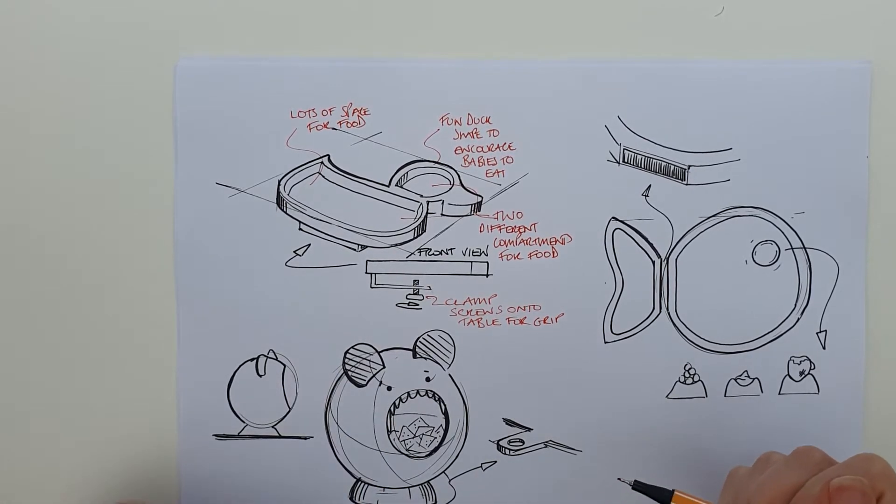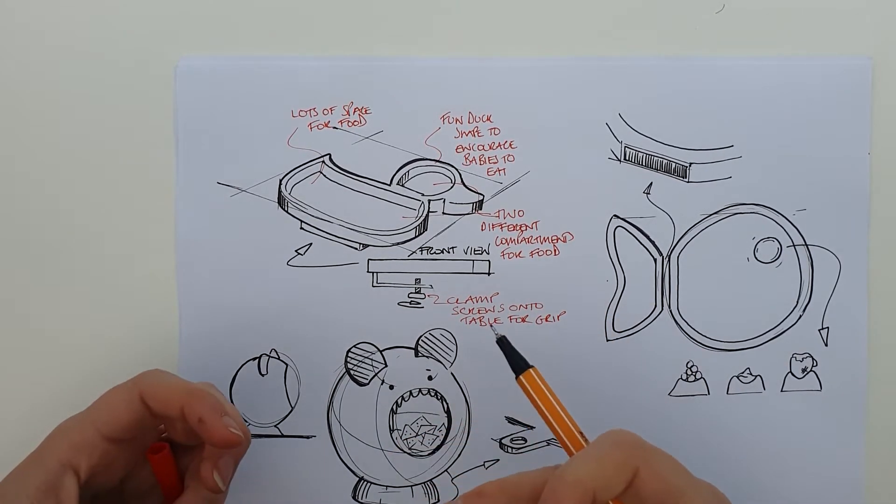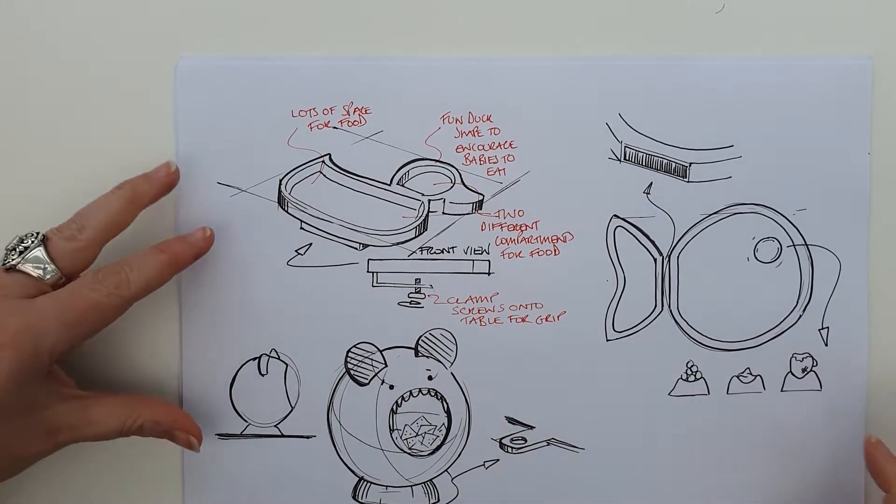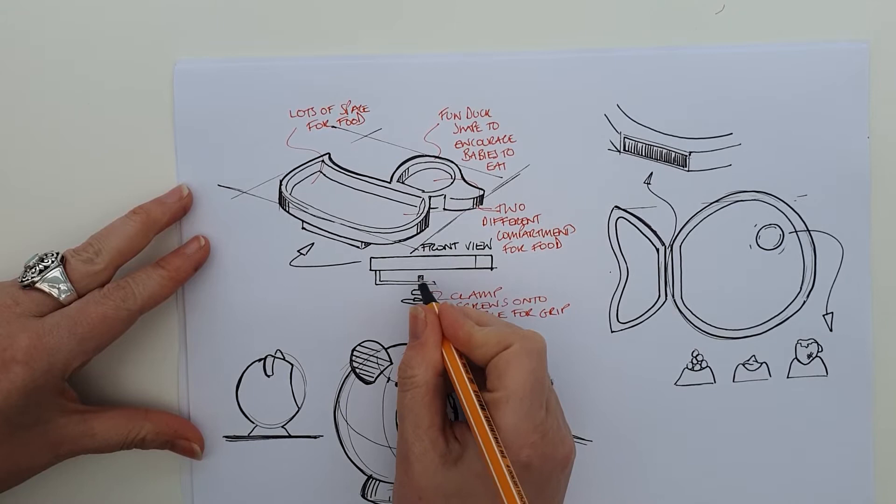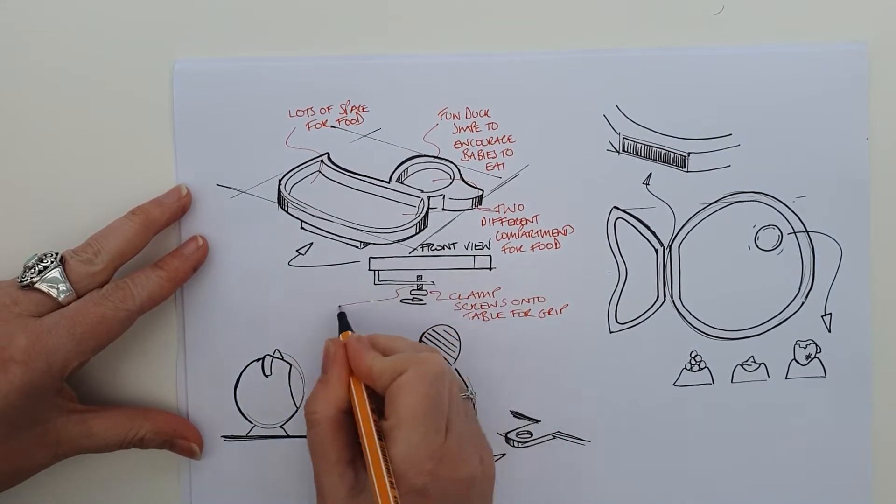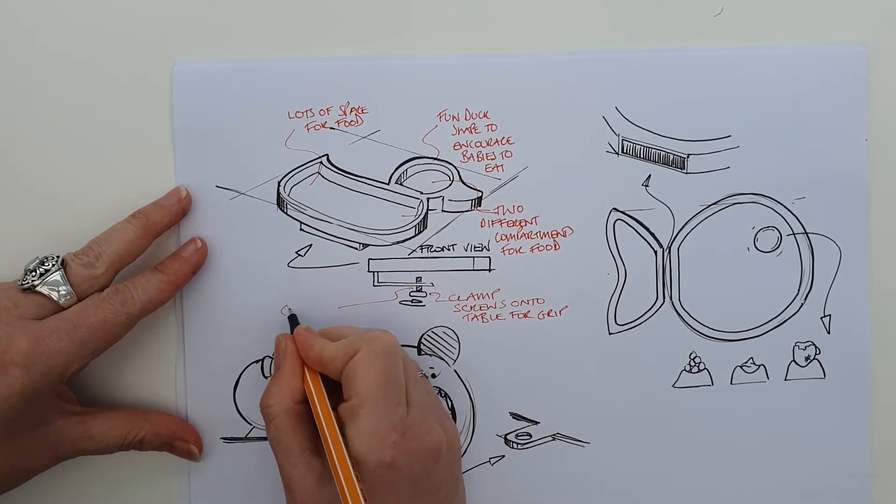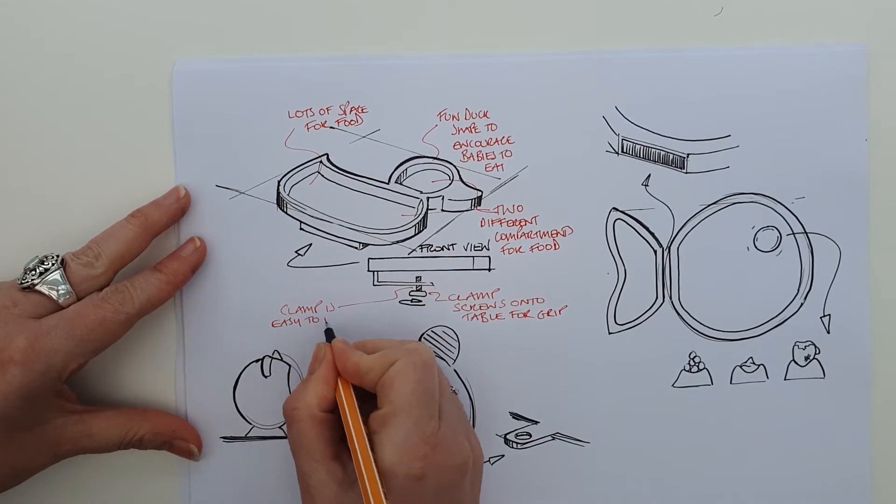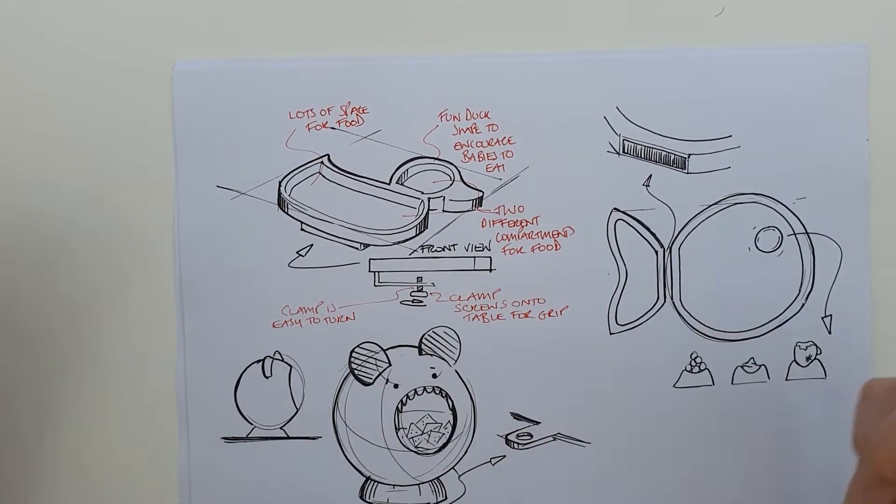So let's talk about ergonomics now. Ergonomics is all to do with, remember, how you interact with a product - be it human sizes, be it strength or strain it puts on you, or understanding the product. So it could be that we've got a thread here, so we've got the clamp. It's easy to turn, so it doesn't put any strain on the user.